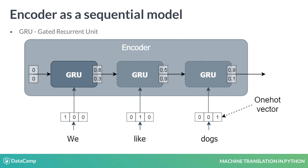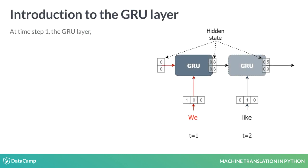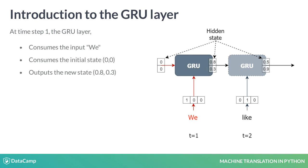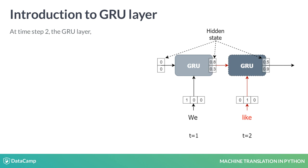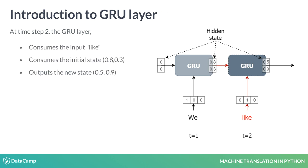For example, the inputs to the encoder is a sequence of English words encoded as one-hot vectors. Let's consider an example. At time equals 1, the GRU model takes in the input word V and some initial hidden state, which are all zeros. Then the model produces a new hidden state, 0.8 and 0.3. In the next time step, the GRU model sees the next word, like, and the previous hidden state, 0.8 and 0.3.